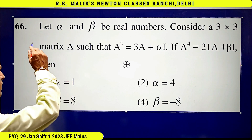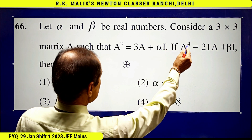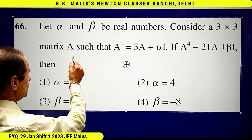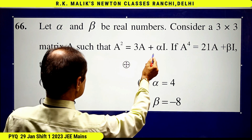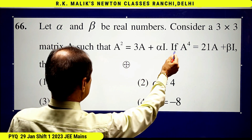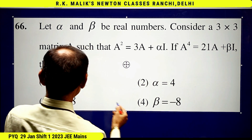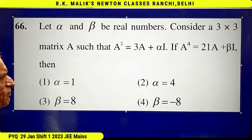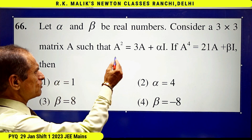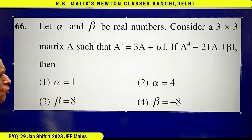In this question, it is given that let alpha and beta be real numbers. Consider a 3 by 3 matrix A such that A squared is equal to 3A plus alpha I, and A to the power 4 is equal to 21A plus beta I. You have to find the correct choice — meaning you have to find the values of alpha and beta using these two equations. It is very easy.